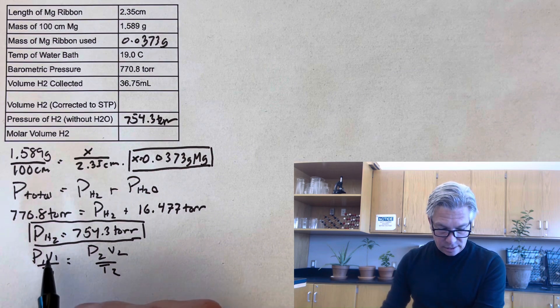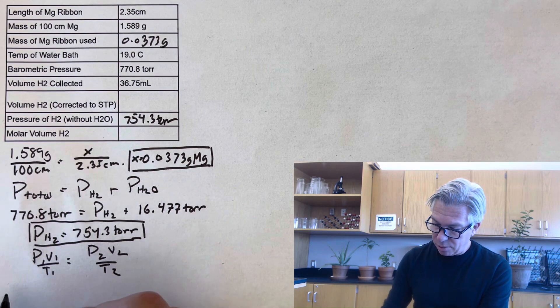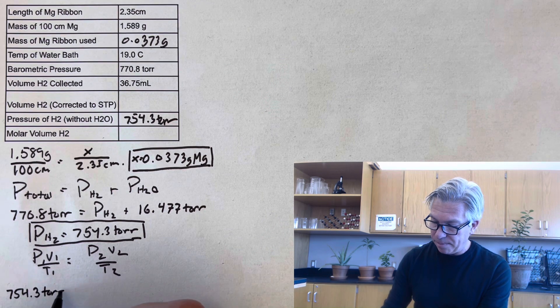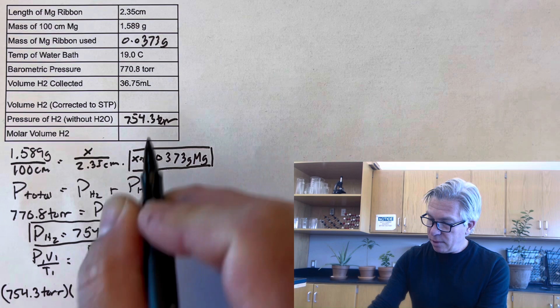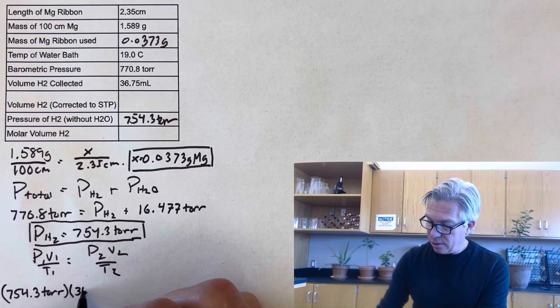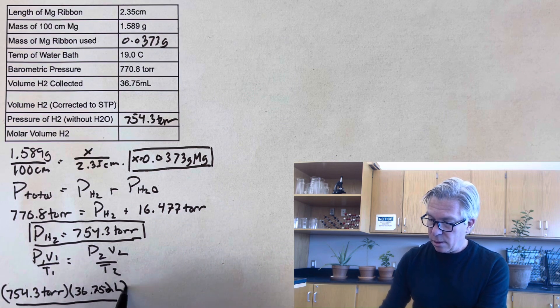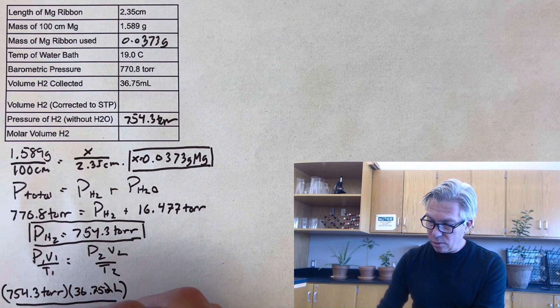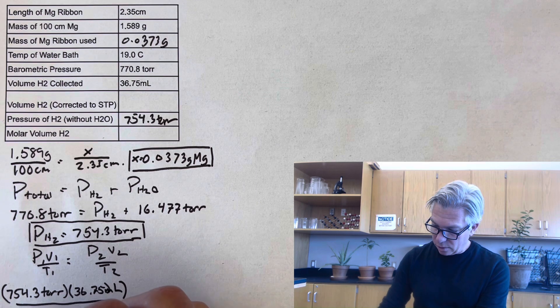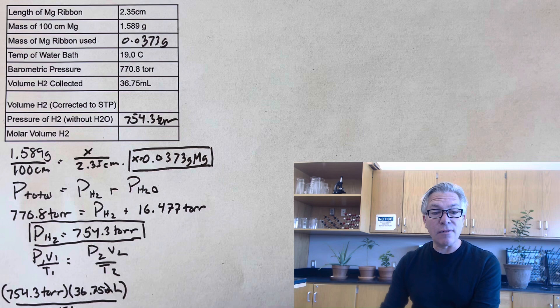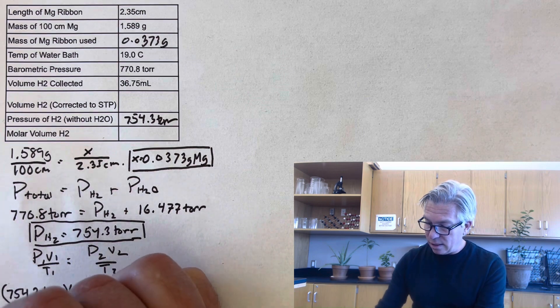So 754.3 is the pressure I want to use. The volume is 36.75 milliliters. I don't have to change that to liters right now. And then the temperature was 19 Celsius or 292.15 Kelvin. Make sure you're using Kelvin temperatures when you're doing these gas laws.